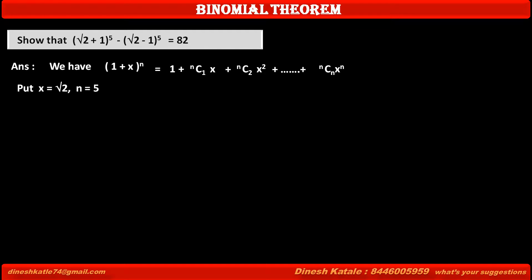Comparing the first binomial of the given problem, (√2 + 1), which we can read as (1 + √2), with the general binomial (1 + x), we get x = √2 and n = 5.